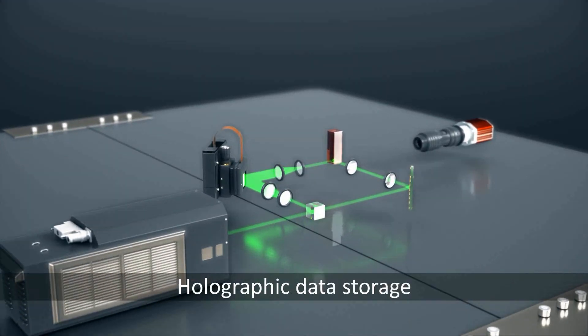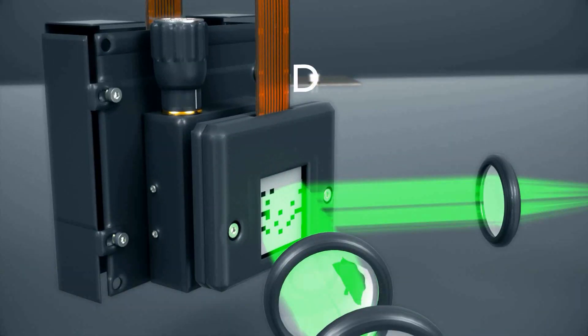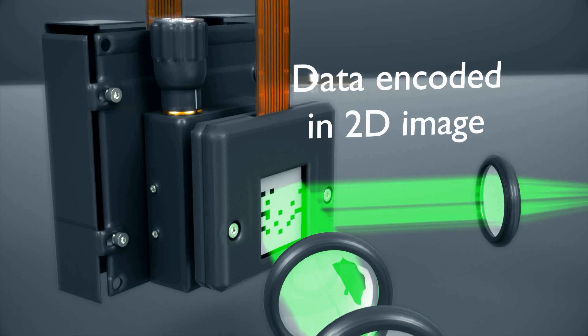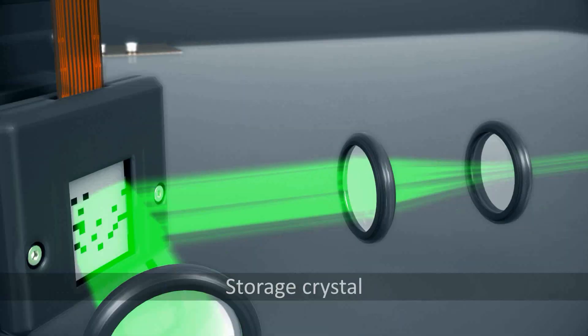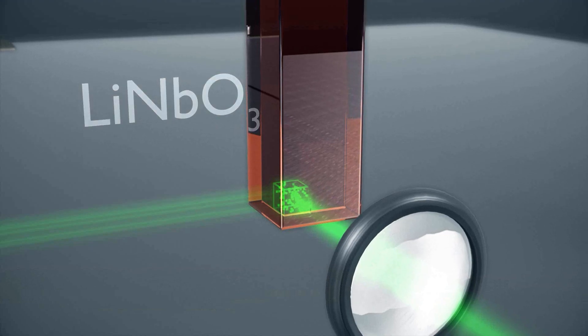So how does holographic data storage work? In order to record a hologram, we encode data into a 2D image using a spatial light modulator. This is very similar to a cell phone screen.